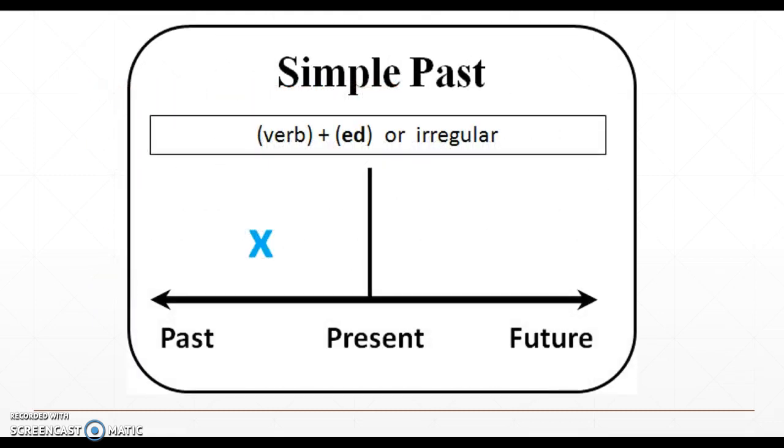So if we look at this chart, this is basically a summary of the past tense. The rule to form the past tense usually is to have a verb, you add '-ed', or it's an irregular past. And also, if we look at this timeline, you can see we have present right here. This X represents the simple past, something that started and ended in the past.